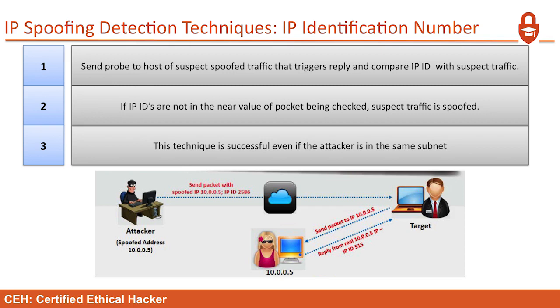Another IP spoofing detection technique is the IP identification number. Send a probe to the host of suspect spoof traffic that triggers a reply, and compare the IPIDs with the suspect traffic. If the IPIDs are not close in value to the packet being checked, the suspect traffic is likely spoofed. For example, if IPID values come back at 5, 20, and 50 from a server but another stream shows 60 million, those aren't even close — the IPIDs should be in the same ballpark.